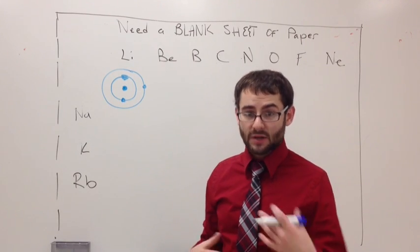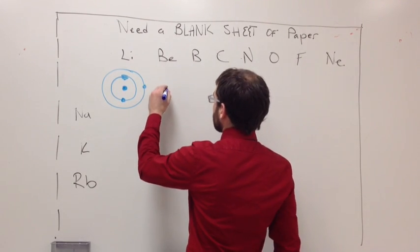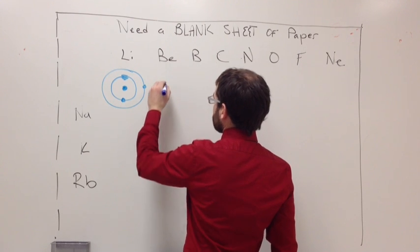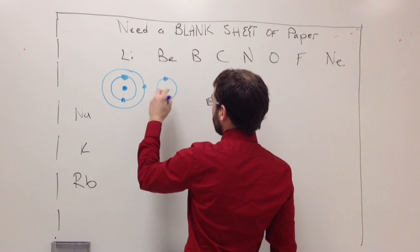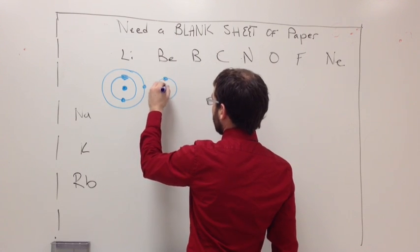Now beryllium, it's number four, meaning that it has four electrons. So if we were to draw beryllium we would have one in the center, we have two around it and again in the center here we know that we have four protons.